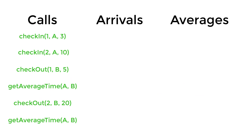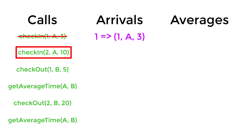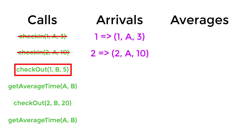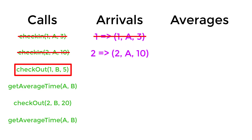Let's walk through a full in-depth example. We check in customer ID 1 at station A at time 3 — we add this data to the arrivals map. Then we check in customer ID 2 at station A at time 10 — again added to the arrivals map. Then we check out customer 1 at station B at time 5. We look up customer ID 1 in the arrivals map, find they arrived at station A at time 3, remove them from arrivals, and compute the difference: 5 minus 3 equals 2. That is how long it took customer 1 to travel from station A to station B.